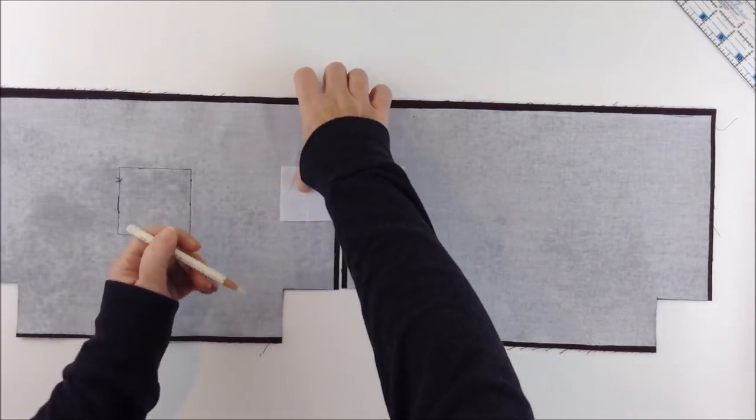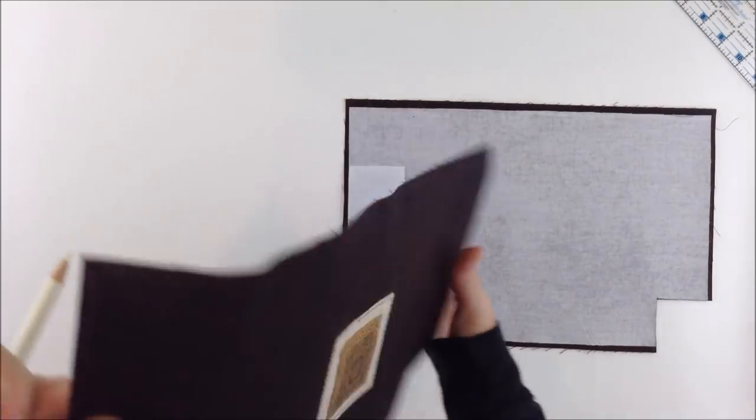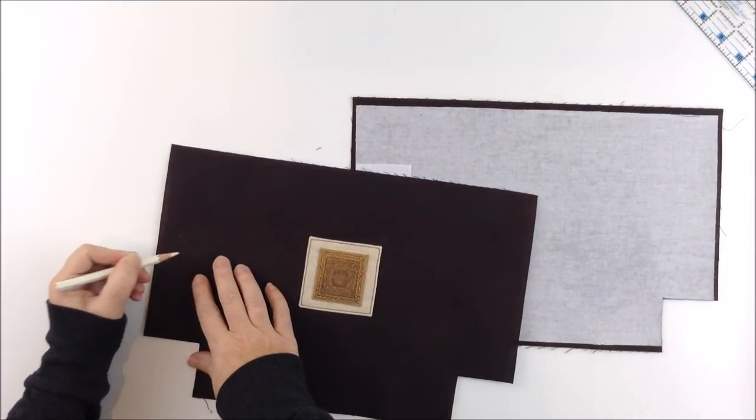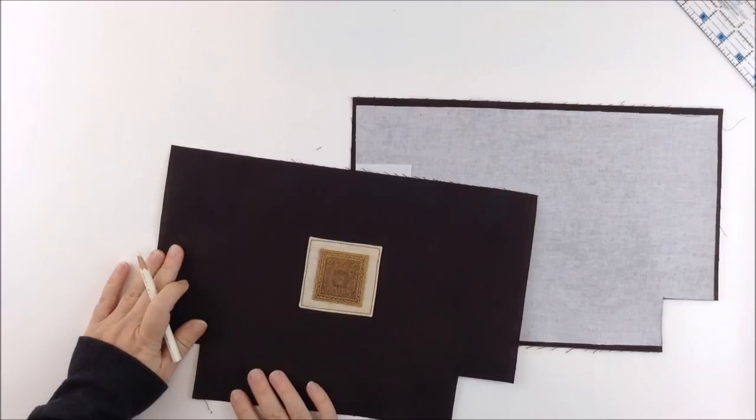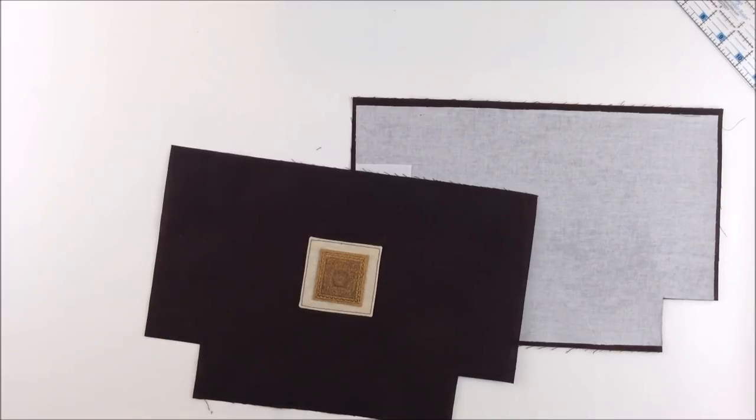Then once you've done that you can mark the outer fabric with a removable marker just so you know which side your extra interfacing is on. Now you can fuse your fleece to the wrong sides and continue on with the pattern as it's written right up to the point of inserting the frames but don't insert them just yet.